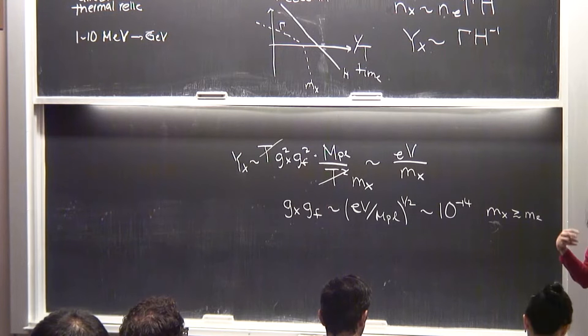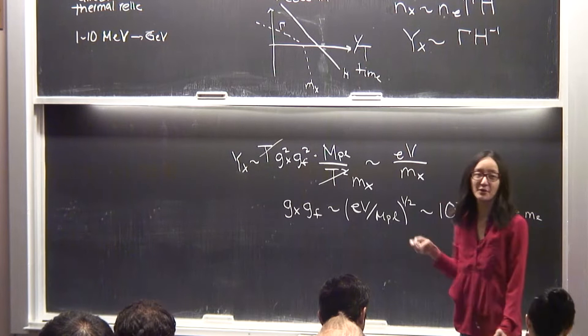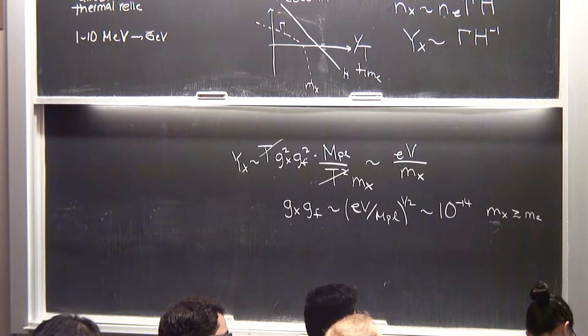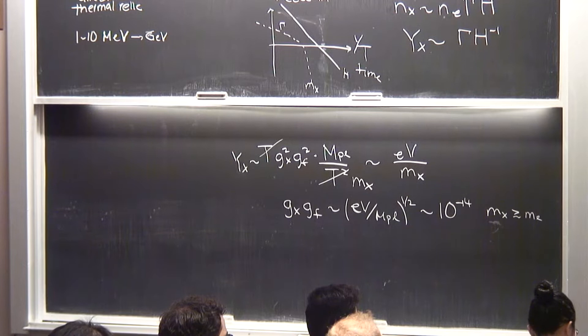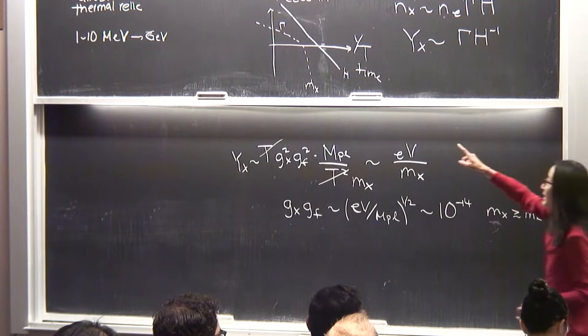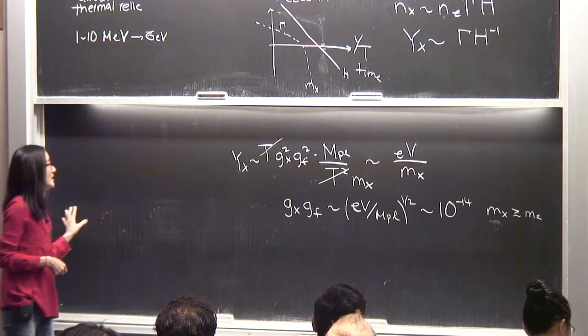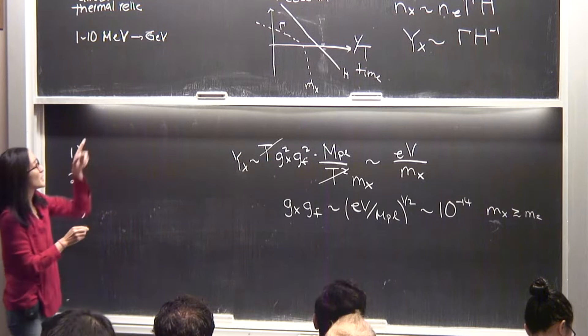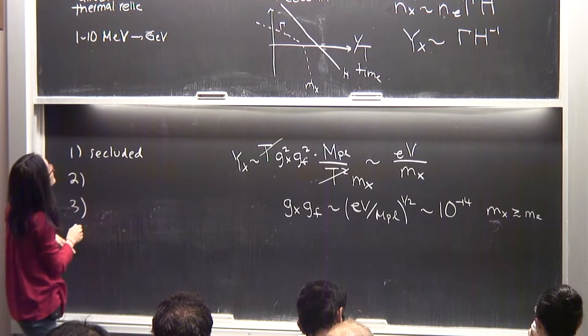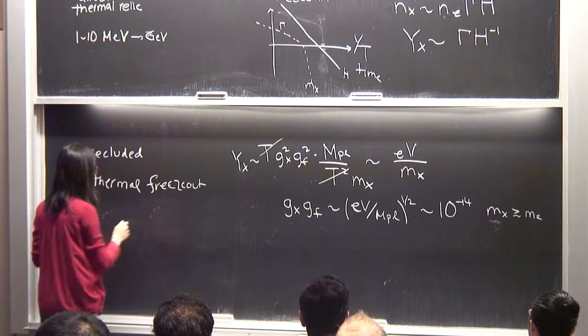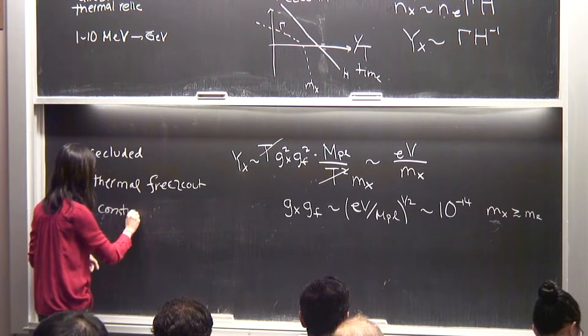One thing motivated last time: for sub-GeV dark matter, new light mediators are needed, and these introduce a portal with the standard model that can be tested experimentally. Today I'll start from the most pessimistic viewpoint and ask whether we actually need a detectable coupling to the standard model in the secluded case. The outline: cosmology of the secluded scenario, cosmology of scenario one, and constraints on portals.